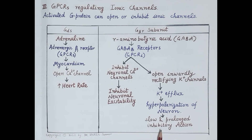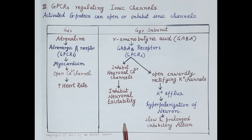In brief, G protein coupled receptors produce physiological responses through three main pathways: the adenyl cyclase pathway, the phospholipase C pathway, and ionic channel regulation.